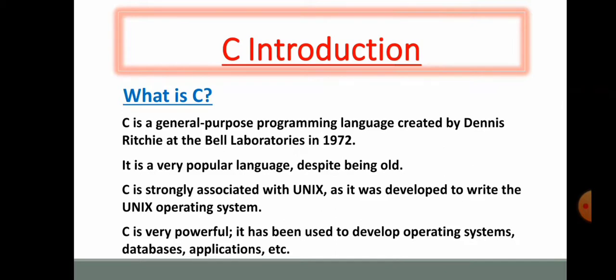C is the most widely used computer language. It keeps fluctuating at number one scale of popularity along with Java programming, which is also equally popular and most widely used among modern software programmers.